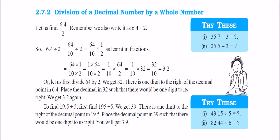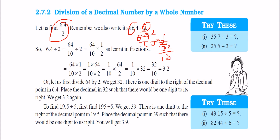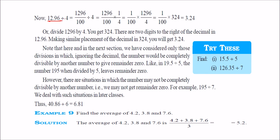For division of a decimal number by a whole number: 6.4 divided by 2 — write 6.4 as 64 by 10, multiply by 1 by 2 to get 32 by 10, which is 3.2. For 82.44 divided by 6: divide 82.44 by 6 directly, then place the decimal. For 12.96 divided by 4: write as 1296 by 100, multiply by 1 by 4 to get 1296 by 400. Dividing 1296 by 4 gives 324; then dividing by 100 places the decimal two spots to give 3.24.